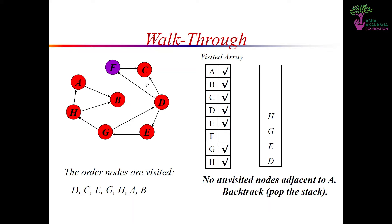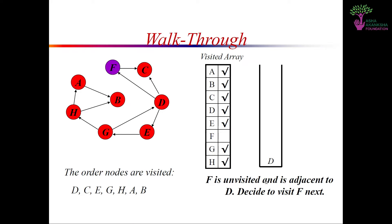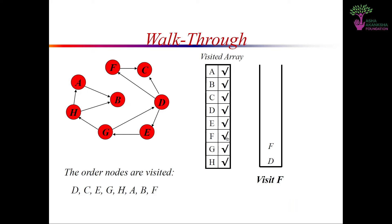We return to D and again check for neighbors of D. Since we have already visited C, it is ticked so we ignore it. Next comes E — E has not been ticked yet, so E has not been visited. We can safely go to E. We visit E, it is ticked, and we put it into our stack. From E we again check for any outward-pointing arrow, and we can see that G is the only adjacent node to E.